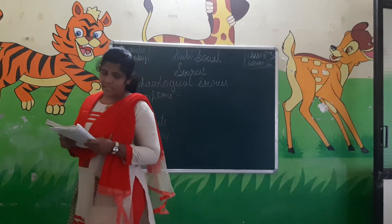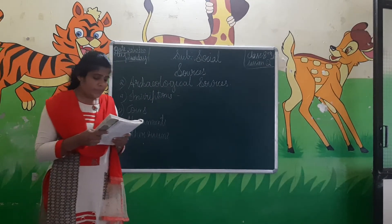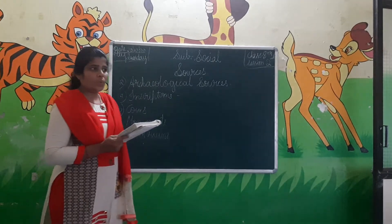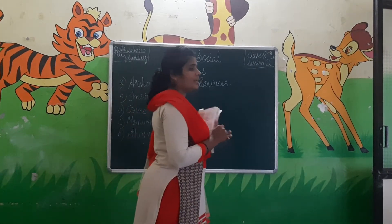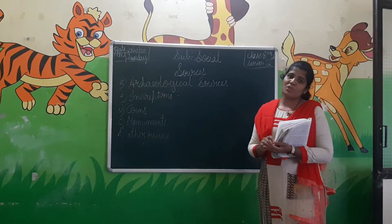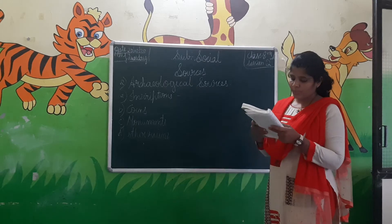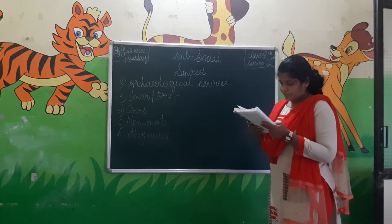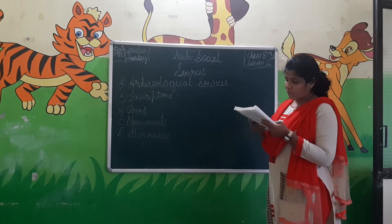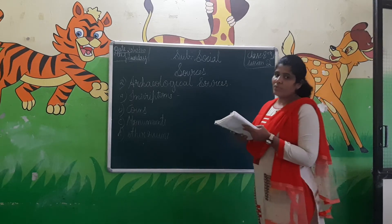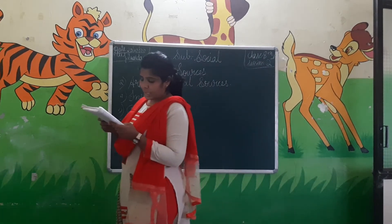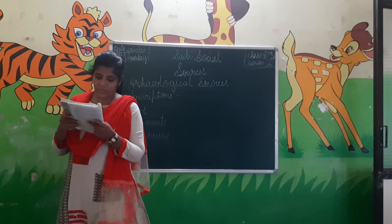Inscriptions may be on stone, rock, metal, or ivory. Ivory means the teeth of elephants — white material. Some inscriptions are written on that also. Terracotta means cloth and other materials which have a very long life. Inscriptions are made available as they have a direct relation with historical events.